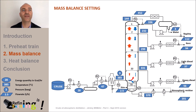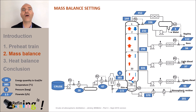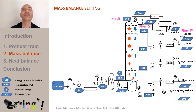But how to adjust this amount of naphtha? Simply by regulating the overhead temperature of the tower, which will naturally act on the amount of reflux. The higher the overhead temperature, the more naphtha is withdrawn and the less reflux rate is re-injected to the tower, and reversely.